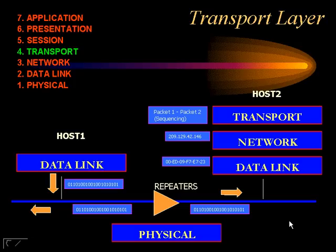Two very important functions that happen here are flow control and windowing. It's TCP that actually manages flow control and windowing at the transport layer, and TCP is probably the most important protocol that resides here. There are other protocols such as SPX and UDP, but it's TCP that we are most concerned with.